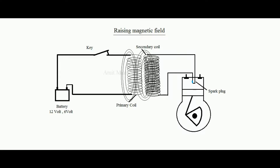The number of turns in the primary and secondary coils are set according to requirements so that a sufficient voltage is developed between the electrodes. When key K is pressed, the magnetic field goes from zero to maximum — this is the dΦ change — and over a short interval of time dΦ/dt is produced in the secondary coil, developing a spark.